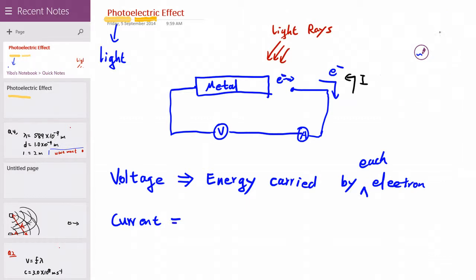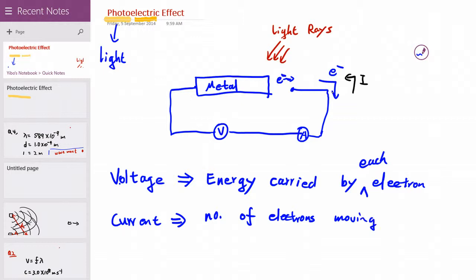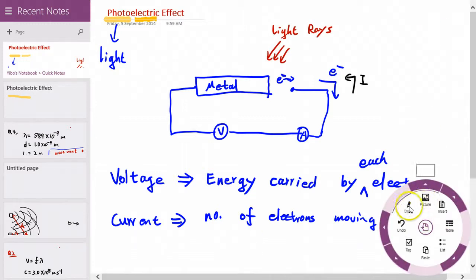Now let's talk about current. Current is the measure of the flow rate of electrons. But since electrons move at a constant rate, having high current doesn't mean electricity moves faster — electricity has a constant velocity in the wire. High current means we have more electrons moving.